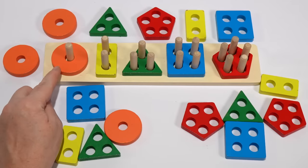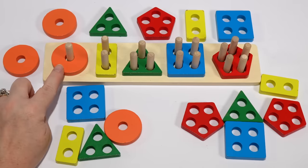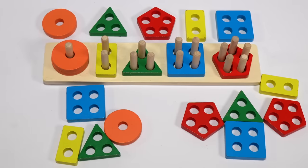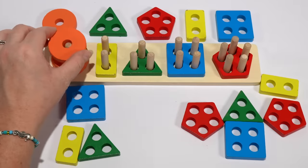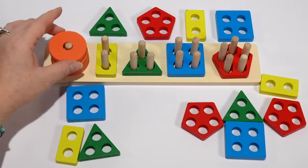So we have an orange circle. Let's count the rest of our orange circles. We have one, two, three, four circles.